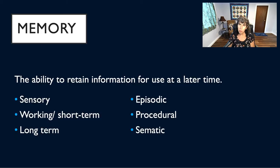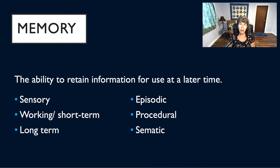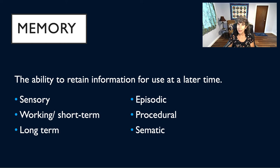Next we're going to look briefly at memory, which is a huge and evolving topic. Memory is defined as the ability to retain information for use at a later time. We have a variety of types of information and different kinds of storage systems. First, we have sensory memory — information coming in through our eyes, ears, skin, and proprioceptive system — and that information is kept for a very short period of time.